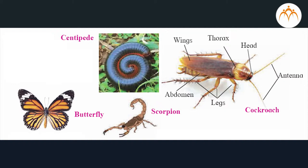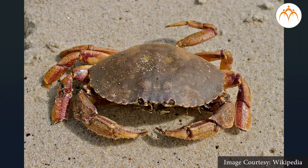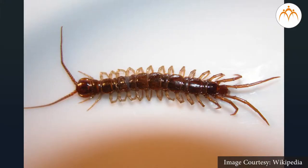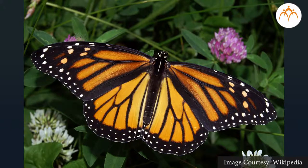The body of these animals is triploblastic, eucoelomate, bilaterally symmetrical, and segmented. A chitinous exoskeleton is present around the body. These animals are unisexual. Examples: crab, spider, scorpion, millipede, centipede, cockroach, butterfly, honeybee, etc. Find out what chitin is. Think about what types of benefit and harm occur to humans from animals of phylum Arthropoda.